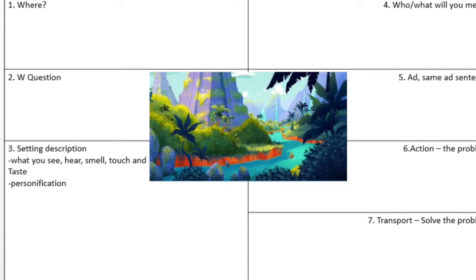This is where the storyline really comes in — it's the real nitty gritty bit where we think about who we meet, the problem, and how we solve the problem. Yesterday, if we had our mountain, we were going up the side of it but hadn't reached the top yet. This bit is when we get to the top and then go back down the other side.